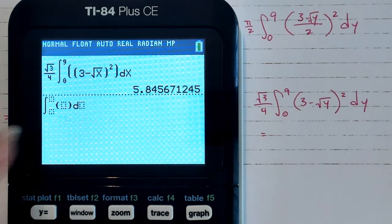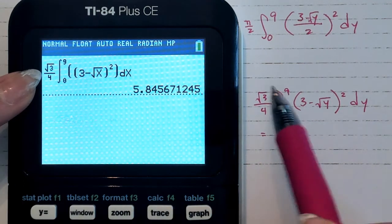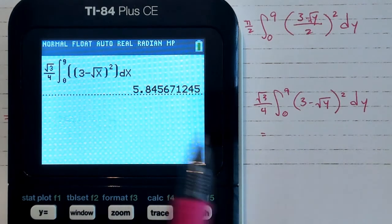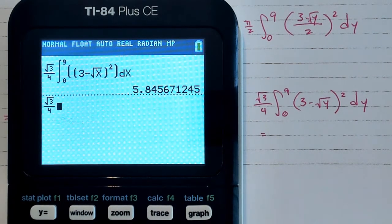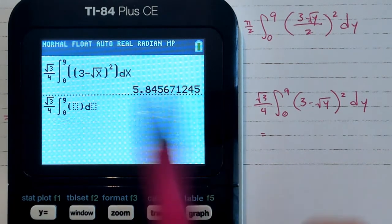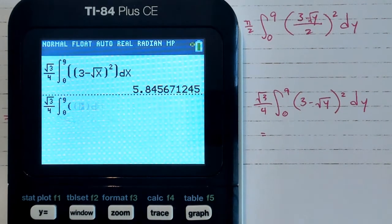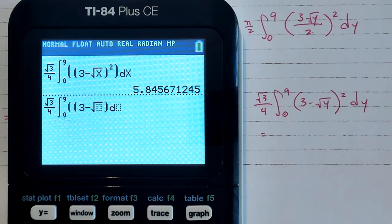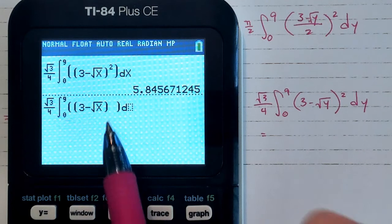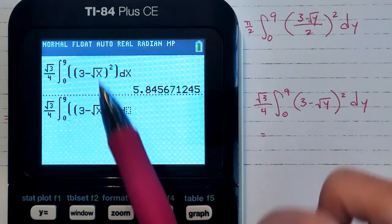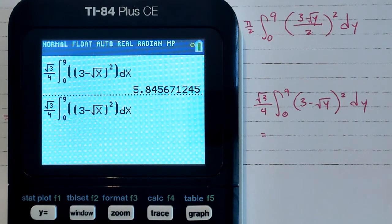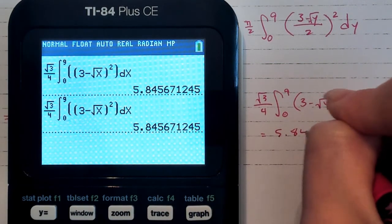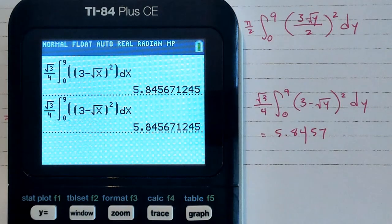I need a fraction, so use alpha → y= to get a fraction. Enter √3 on top and 4 on the bottom, then press Math 9. I'm integrating from 0 to 9. Inside, it's a quantity squared — parentheses, 3 minus √x, close the parentheses outside the root, then square it. It looks exactly the same as the formula — just with x replacing y. Press enter, and you should get 5.8457 to four decimal places.